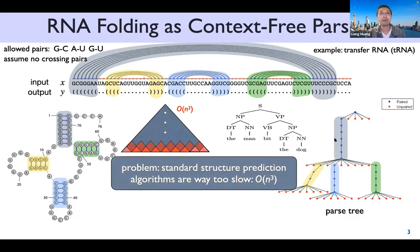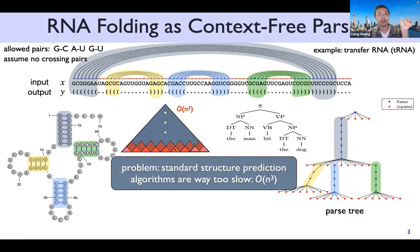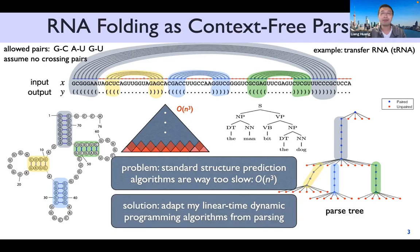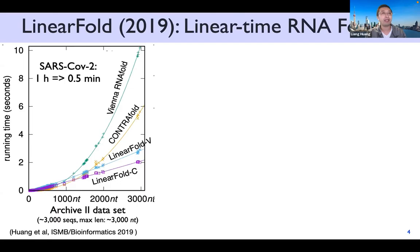We can totally model RNA structure as a parse tree, assuming no pseudoknots, no crossing pairs. We realize the same algorithm we've been developing in NLP — the standard bottom-up algorithm that parses natural language sentences in cubic time O(n³), where n is the sentence length — can be used to fold RNAs. That was basically the case before LinearFold: people have been using this cubic time algorithm for about 40 years, starting from Nussinov and Zuker in 1978 and 1981. Those algorithms are very much the same as the CKY algorithm used in natural language parsing.